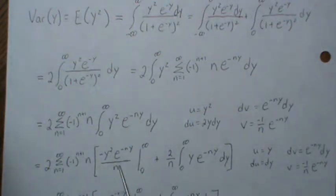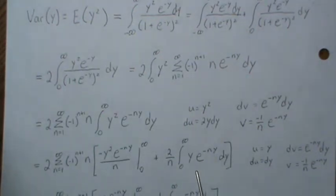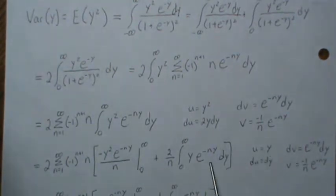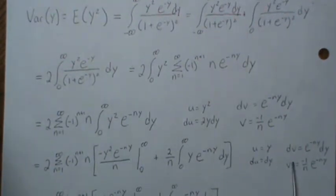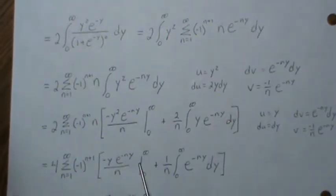And then when you plug in zero it goes to zero, so this drops out. We're left with this. This two can be brought out, so that makes it a four, and the n's will cancel, and we're left with this. Well now, this piece: let's do integration by parts again. Let u be y and this piece here be dv. You solve it and you plug it in.